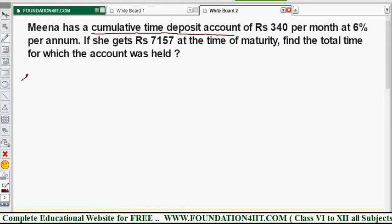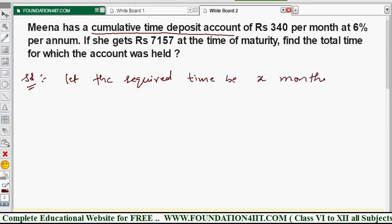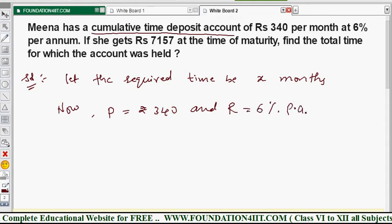Let the required time be x months. So n equals x, the number of months we need to find out. The principal per month (monthly installment) P = ₹340, and the rate of interest R = 6% per annum. These two values are given.